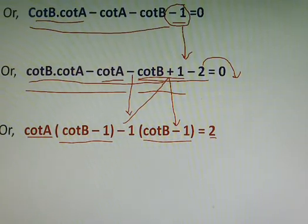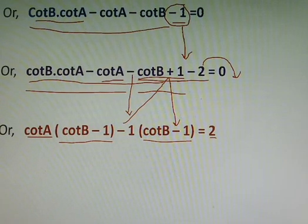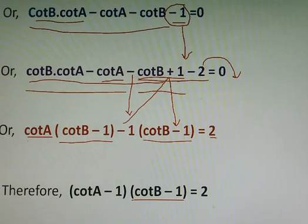Finally, after this step, since cot B minus 1 and cot B minus 1, these two are common, we will keep these two parts in one bracket, and this cot A and minus 1 will remain inside the other bracket, and 2 that will be same.